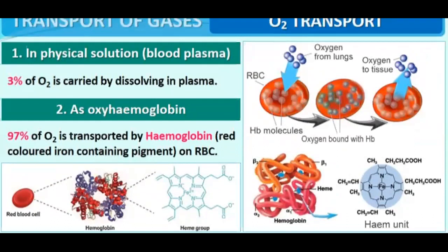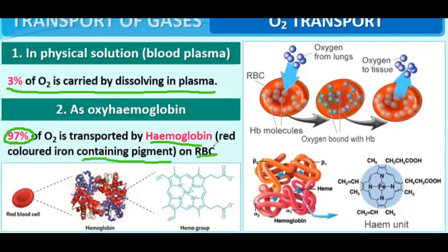In blood plasma, only 3% of oxygen is dissolved and transported in plasma. The remaining 97% of oxygen is transported by hemoglobin — a red-colored, iron-containing pigment carried on RBCs. So 97% of oxygen is transported as oxyhemoglobin and 3% as a physical solution inside the blood plasma.